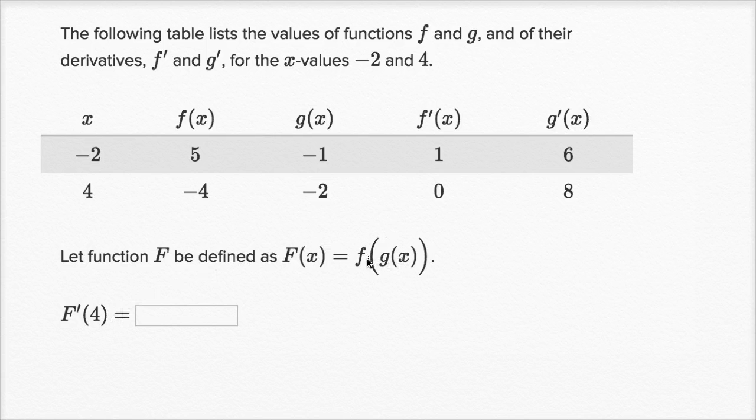So you might immediately recognize that if I have a function that can be viewed as the composition of other functions, that the chain rule will apply here. And so I'm just going to restate the chain rule. The derivative of capital F is going to be the derivative of lowercase f, the outside function, with respect to the inside function. So lowercase f prime of g of x times the derivative of the inside function with respect to x, times g prime of x.